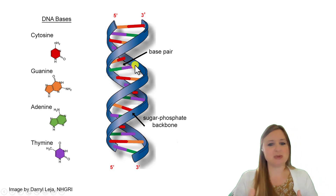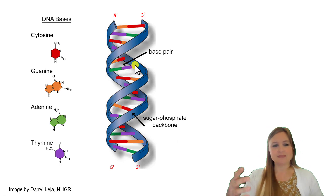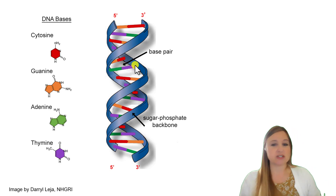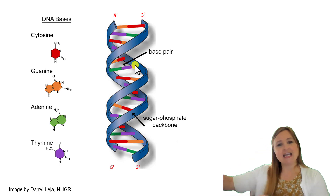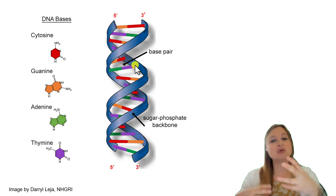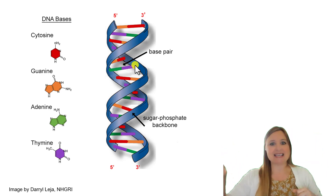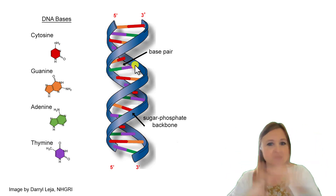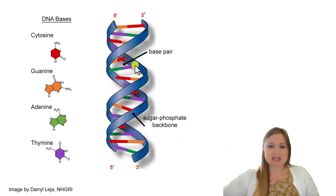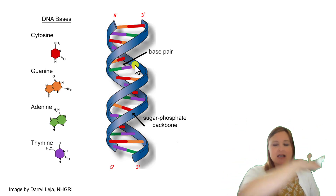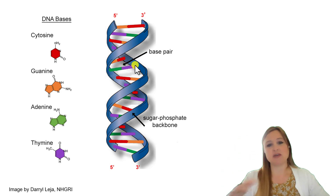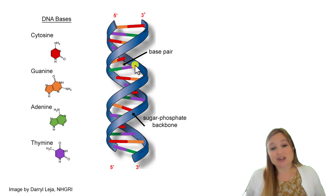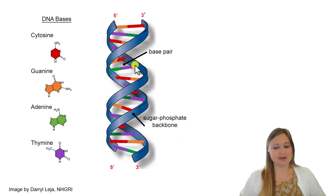This complementary base pairing is really important to keep in mind, because when we're copying DNA or creating RNA it follows those same rules — new DNA laid down in the five prime to three prime direction will have nucleotides complementary to the template strand. We'll talk about that in a different video.